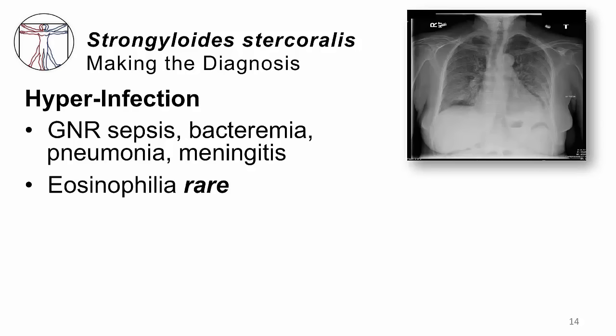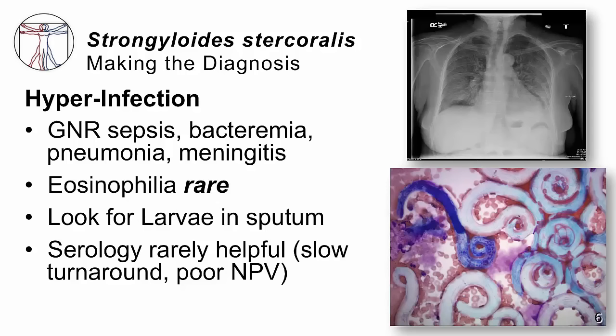For hyperinfection, things are much more serious and acute. Think about hyperinfection in patients who have gram-negative rod sepsis, gram-negative rods in their bloodstream, pneumonia, or meningitis. They usually do not have a high eosinophil count — that's the whole problem. If they had high eosinophils, they would not have hyperinfection. So don't be led astray by the lack of eosinophilia in hyperinfection. You should look for larvae not only in the stool but in the sputum, because these worms are reproducing right in the lungs. The picture shown comes from an autopsy of a patient who recently passed away, and the sputum was absolutely packed with these worms.